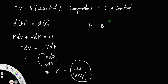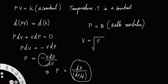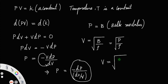So P equals B, where B is the bulk modulus. We already derived the formula for longitudinal waves: the velocity of a longitudinal wave equals the square root of bulk modulus divided by density. Since the bulk modulus equals P, according to Newton's formula the velocity of sound waves through any gas equals the square root of pressure divided by density.